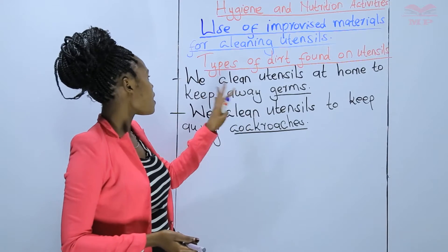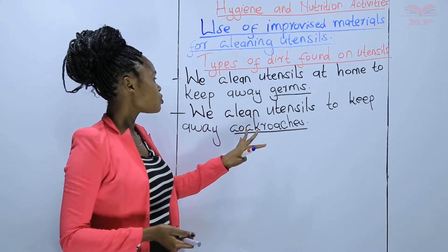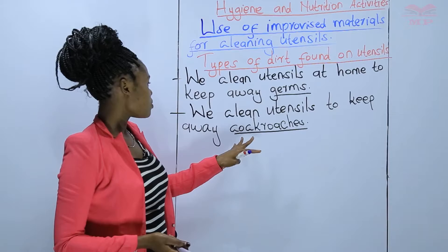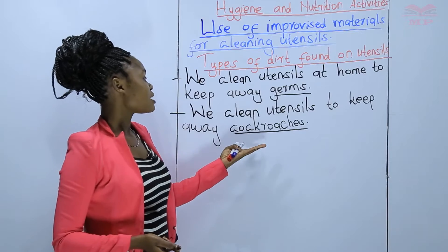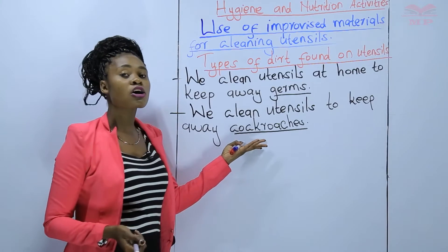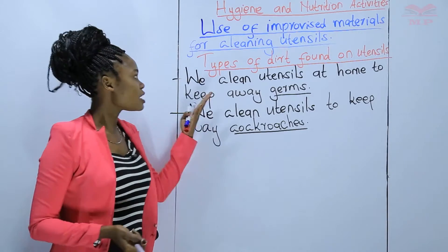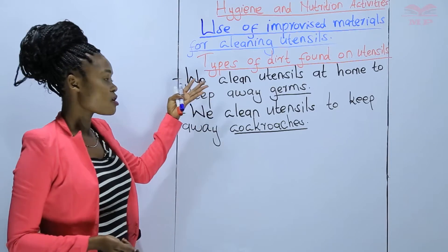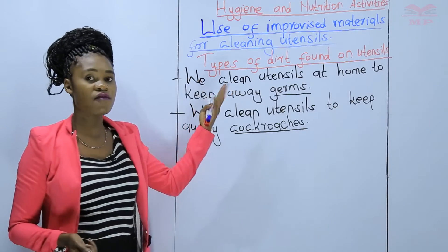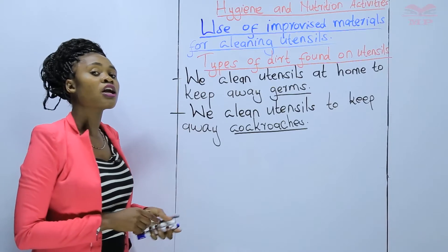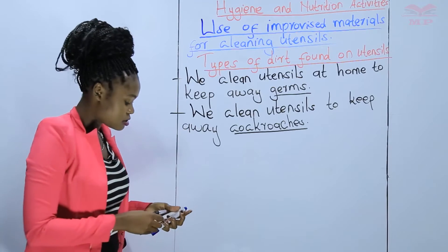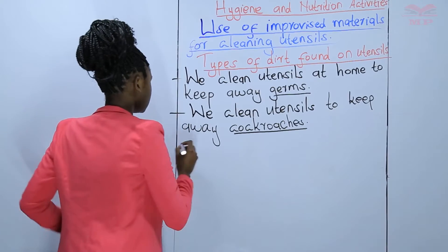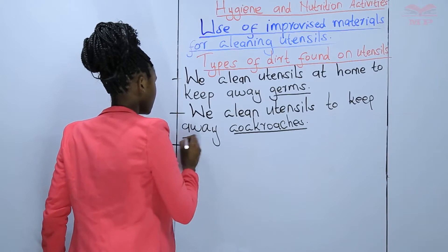First, to keep away germs. And second, to keep away pests like cockroaches. So, what are some of the types of dirt that are found on utensils? Types of dirt.